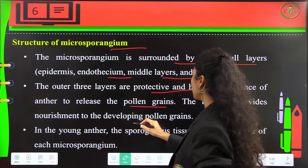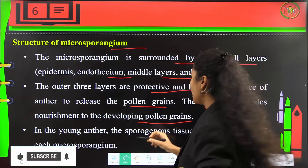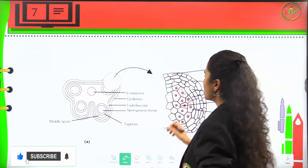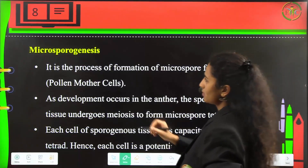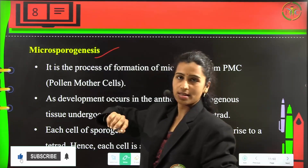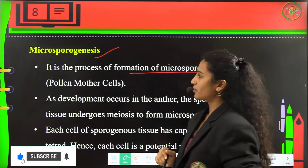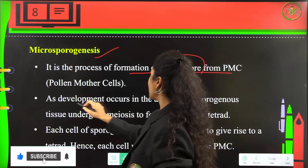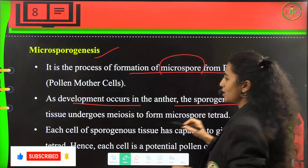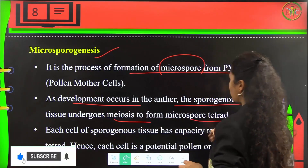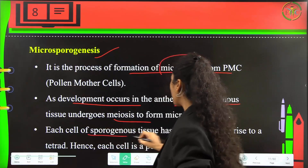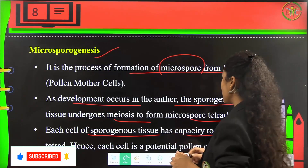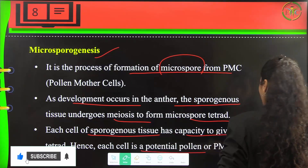The outer three layers are protective and they help in the dehiscence of the anther to release pollen grains. The tapetum provides nourishment to the developing pollen grains. In younger anthers, the sporogenous tissue forms the centre of each microsporangium. Microsporogenesis is the process of formation of microspores from the pollen mother cells — it is the formation of male gametophytes. As development occurs in the anther, the sporogenous tissues undergo meiosis to form microspore tetrads. Each cell of the sporogenous tissue has the capacity to give rise to a tetrad, and hence each cell is a potential pollen mother cell (PMC).